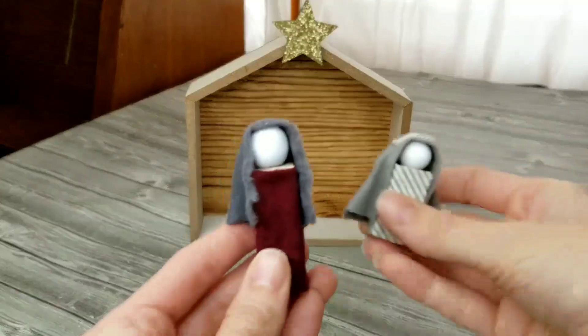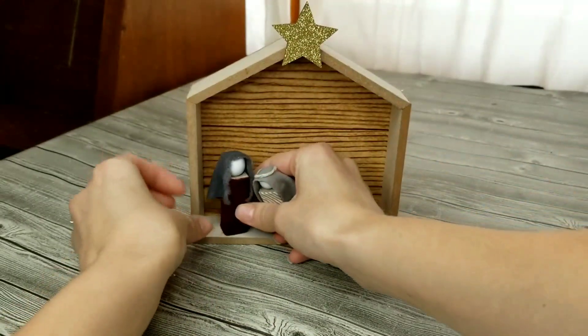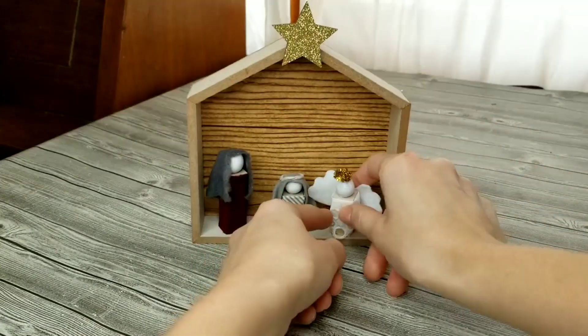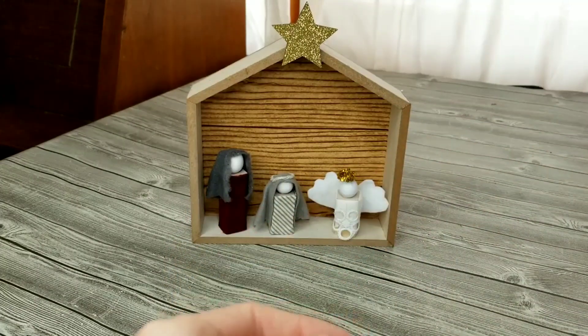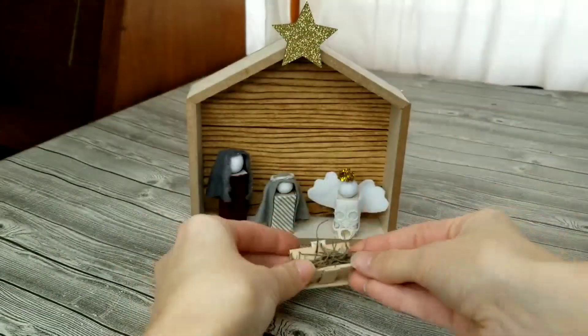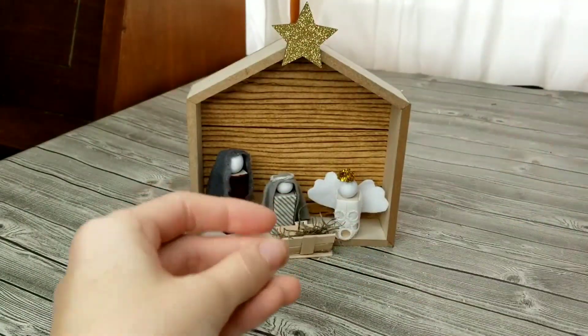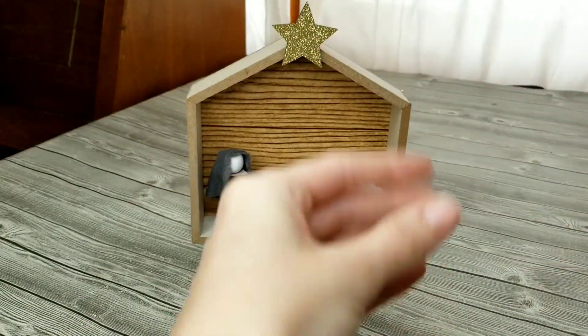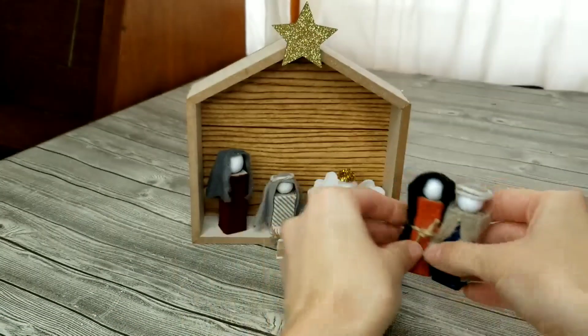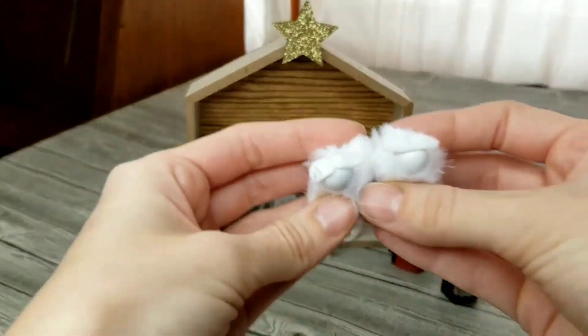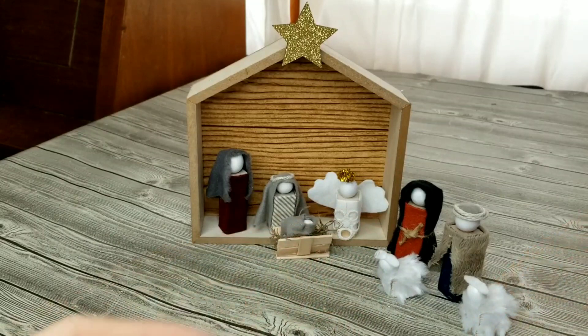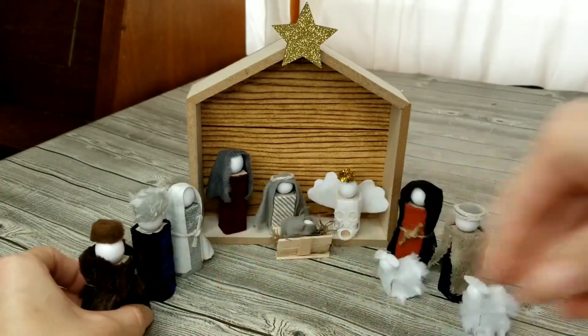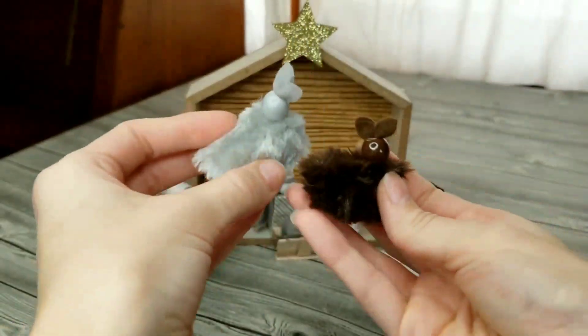All of the pieces to the nativity scene are Joseph and Mary. Next is the angel, a bed for Jesus, the tiny baby Jesus. Then I made two shepherds, two sheep, three wise men, a donkey, and a cow.